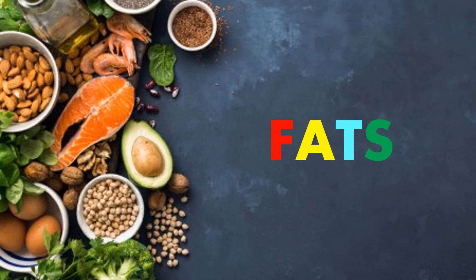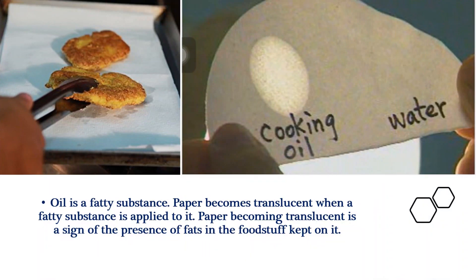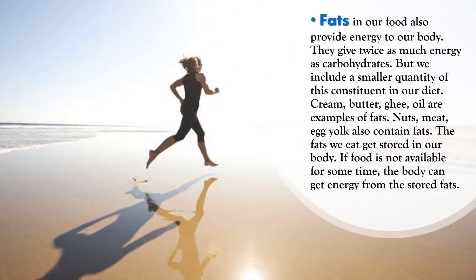Another macronutrient is fats. Oil is a fatty substance. Paper becomes translucent when a fatty substance is applied to it, and paper becoming translucent is a sign of the presence of fats in the foodstuff kept on it. Fats in our food also provide energy to our body — they give twice as much energy as carbohydrates, but we should include a smaller quantity of these constituents in our diet. Cream, butter, ghee and oil are examples of fats. Nuts, meat and egg yolk also contain fats. The fats we eat get stored in our body, and if food is not available for some time, the body can get energy from the stored fat.